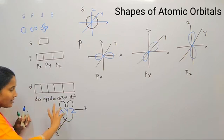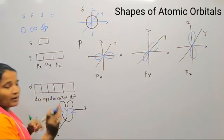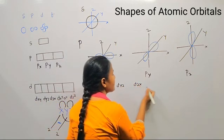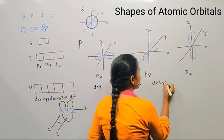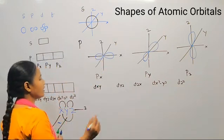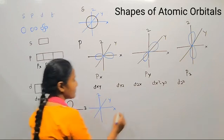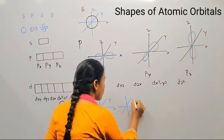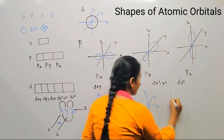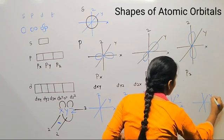To draw the d orbitals, first draw the three coordinate axes — x-axis, y-axis, and z-axis. Draw the three coordinate axes for each of the five d orbitals: dxy, dyz, dzx, dx²-y², and dz². Draw x-axis, y-axis, and z-axis for each one.